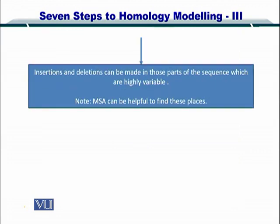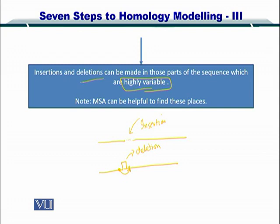Next, insertions and deletions — that is, insertion of an amino acid within a sequence. For instance, if you have an amino acid sequence with a gap, you need to have an insertion to bridge that gap. Or if you have an extra amino acid, then you can have a deletion as well. By deleting it, you are connecting the backbone back again. These two things can only be done in regions of the protein which are highly variable. Multiple sequence alignment can help you find these regions.